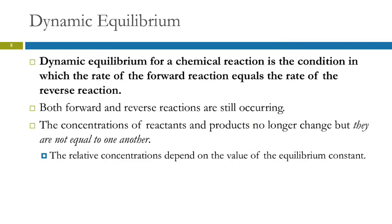Dynamic equilibrium is the condition in which the rate of the forward reaction equals the rate of the reverse reaction. We have both of those reactions occurring. Concentrations are not changing, but we cannot say that they are equal to each other. It does not mean that the concentration of reactants and products is equal. They could be equal, but that's unusual. They are just not changing anymore.